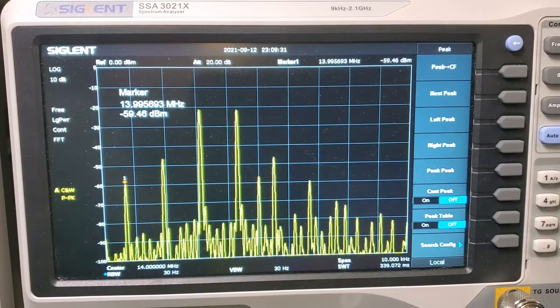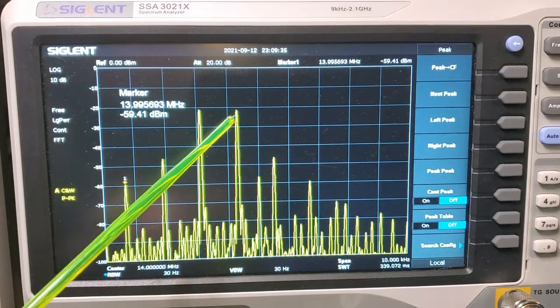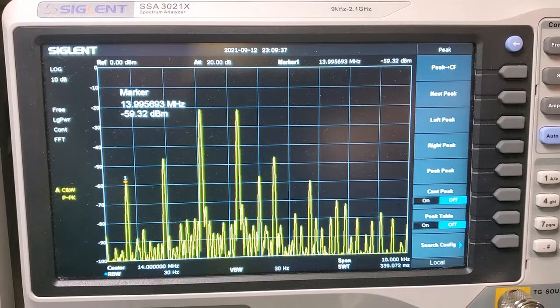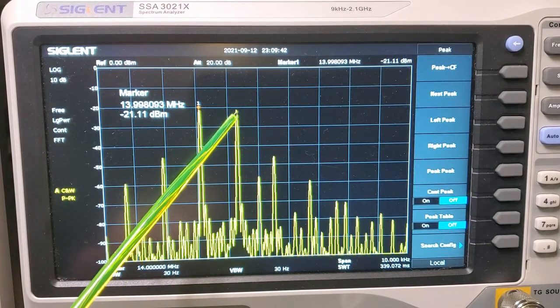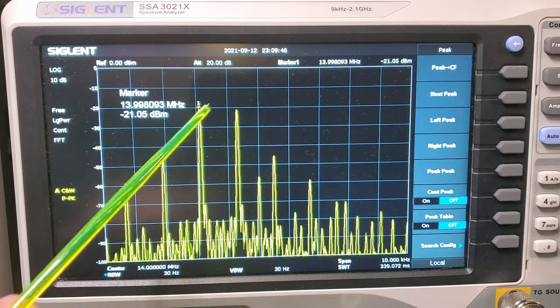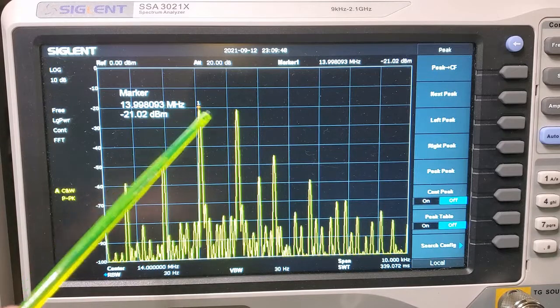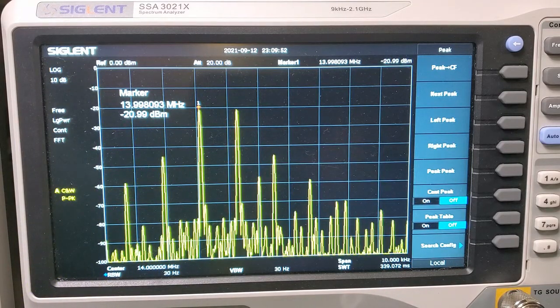So let's have a look at that same output on the spectrum analyzer. You can see here the two major peaks. There's a peak here at offset 700 hertz from the carrier, which is down here, and another peak which is offset 1900 hertz from the carrier. They're both at minus 21 dBm.